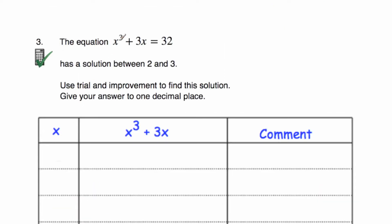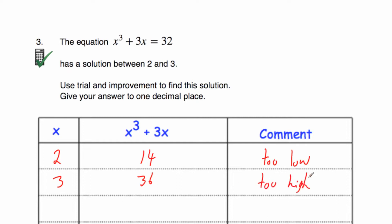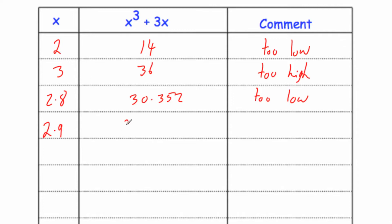Question 3: the equation x cubed plus 3x equals 32 has a solution between 2 and 3. So let's try 2: 2 cubed plus 3 times 2 equals 14. We want 32, so that's too low. Let's try 3: 3 cubed plus 3 times 3 equals 36, which is too high. We're looking for 32 and 3 gives 36, so let's try 2.8: 2.8 cubed plus 3 times 2.8 equals 30.352, too low.